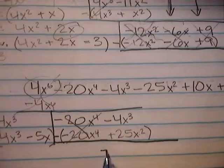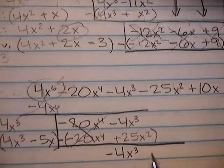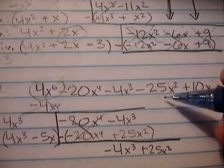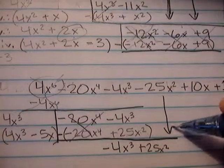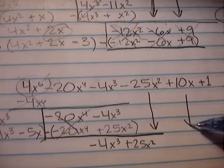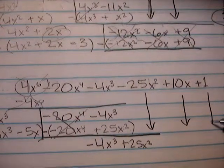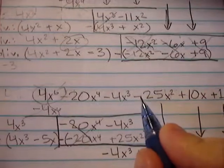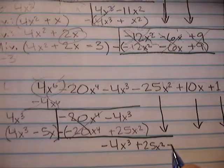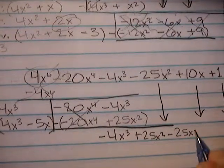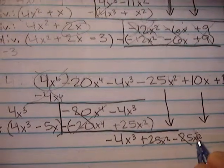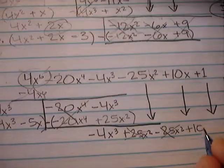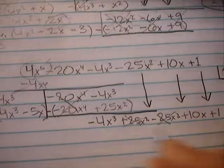So when you write it out, you're just going to write negative 4x cubed plus 25x squared. And then just go on bringing down your numbers, like you've always done. And we're going to go ahead and bring down all three of these because you can see right here when you bring down this negative 25x squared. Look at that. That will cancel with it because they will just cancel each other out. And then let's bring down our plus 10x and our plus 1.